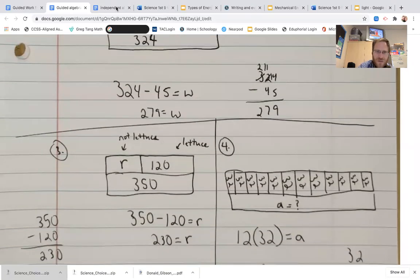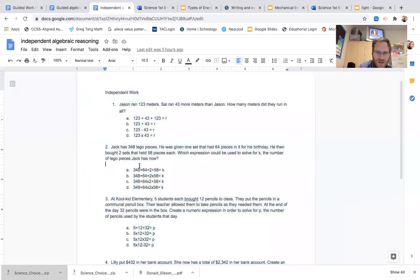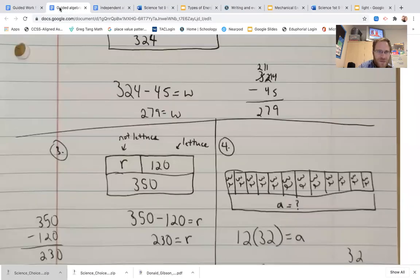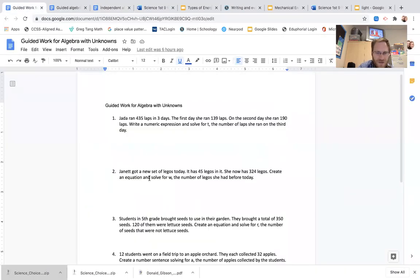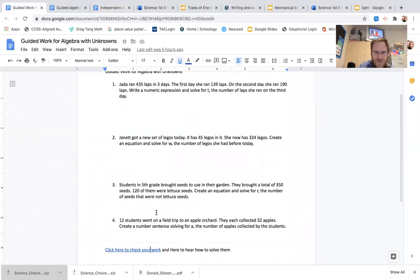All right, so let's go to number three. Number three says—whoops, that's something else. My bad. Three says, students in fifth grade bought seeds to use in their garden. They brought a total of 350 seeds. 120 of them were lettuce seeds. Create an equation to solve for R, the number of seeds that were not lettuce seeds.